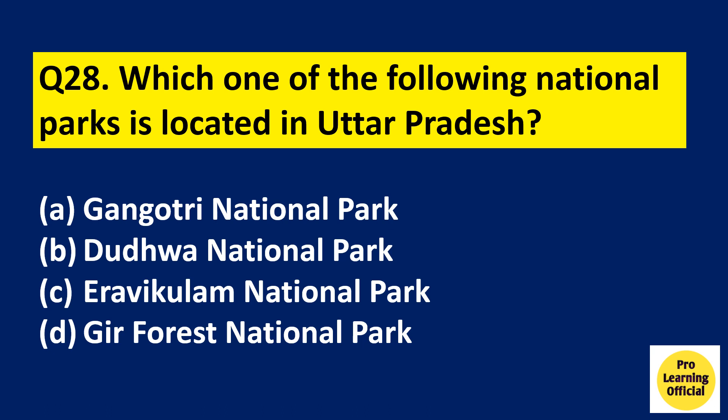Question 28: Which one of the following national parks is located in Uttar Pradesh? Option A: Gangotri National Park. Option B: Dudhwa National Park. Option C: Eravikulam National Park. Option D: Gir Forest National Park. The right answer is Option B, Dudhwa National Park, which is in Uttar Pradesh. Gangotri National Park is in Uttarakhand, Eravikulam National Park is in Kerala, and Gir Forest National Park in Gujarat is known for Asiatic lions.